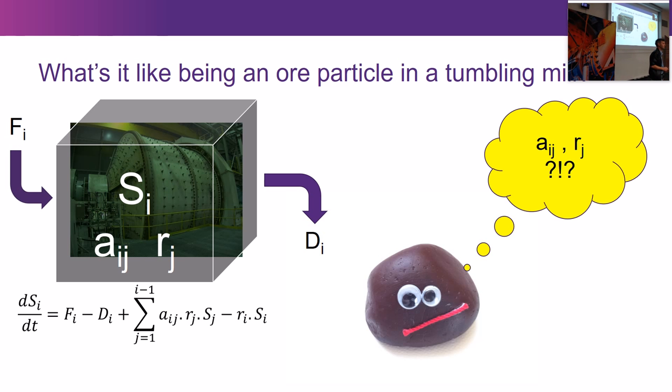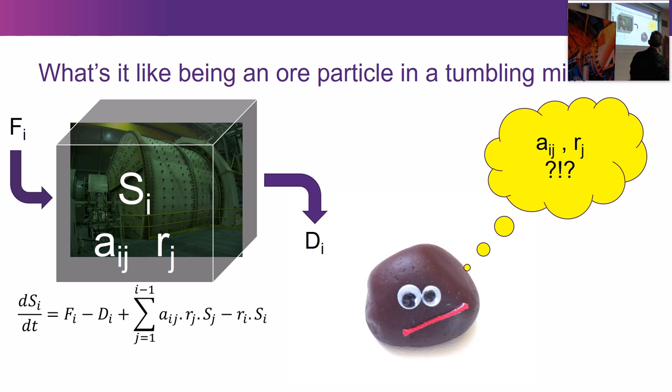The rock does have a conception of where it is, but it doesn't have the big picture. It doesn't know about the whole system — it only knows about its immediate environment. So the question is, can we get an understanding of this ore particle's journey through a tumbling mill — a description that applies to that particle and all of its neighbours — while still maintaining the capacity to predict what's going to come out of the mill if we know what goes in and what's going on inside?